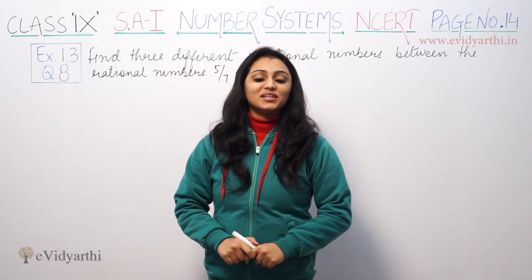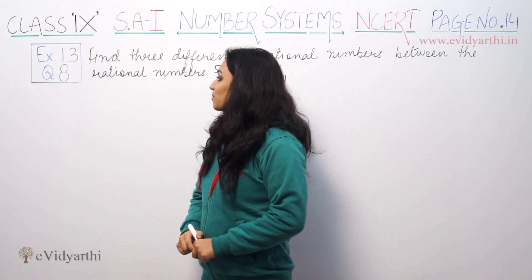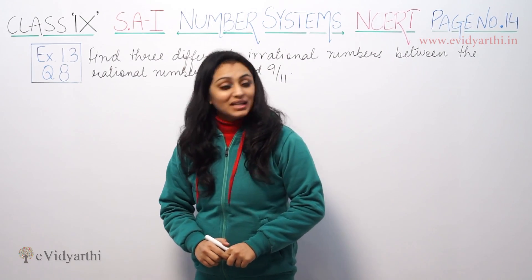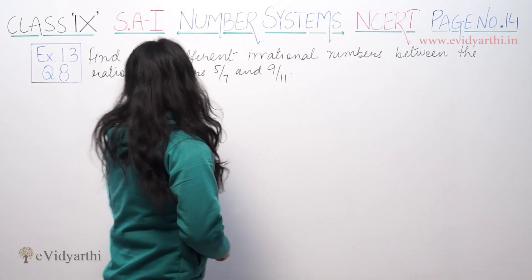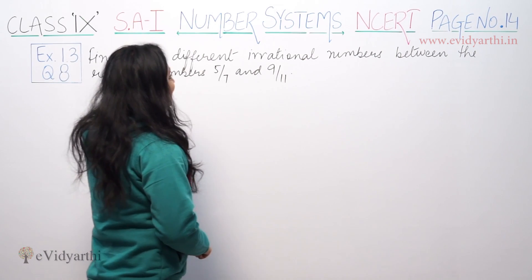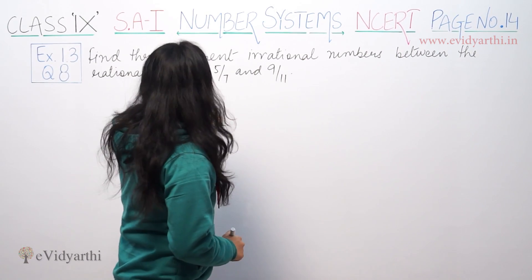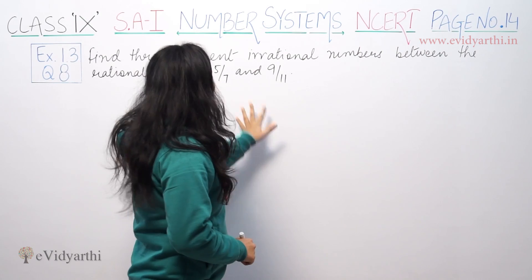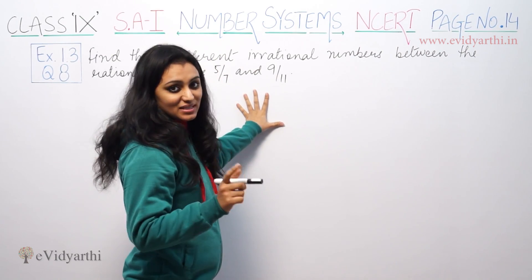Hi, this is Khushpoo with another question of number systems. This is question number 8 from exercise 1.3, page number 14 from NCERT. This question asks us to find three different irrational numbers between 5 by 7 and 9 by 11. We will find these irrational numbers.